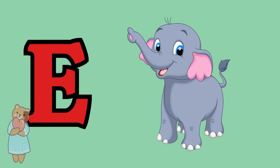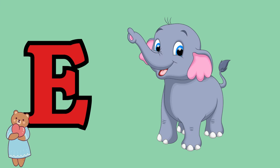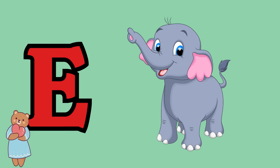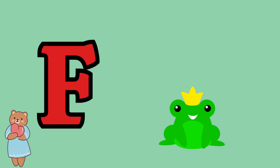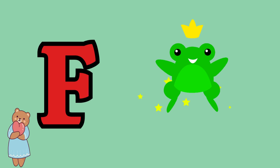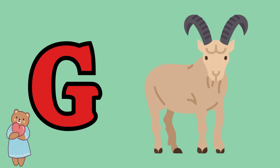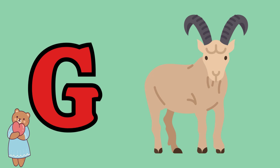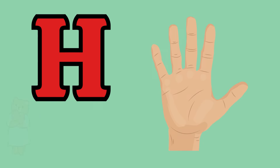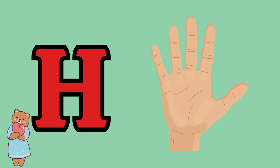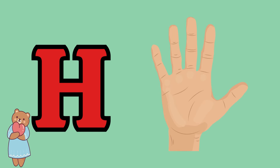E is for elephant, e-e-elephant. F is for frog, f-f-frog. G is for goat, g-g-goat. H is for hand, ha-ha-hand.